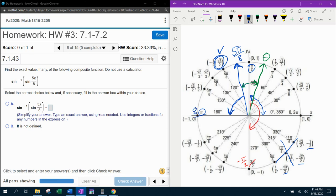From 5π/8 to 8π/8, how many eighths is that? Five, six, seven, eight. So that would be 3π/8. That would be my reference angle.